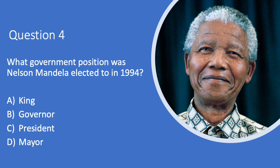Question four is about Nelson Mandela. What government position was Nelson Mandela elected to in 1994? Was it A. Did he become the king? B. The governor? C. A president? Or D. The mayor? He was elected in 1994 to a government position — what was it?